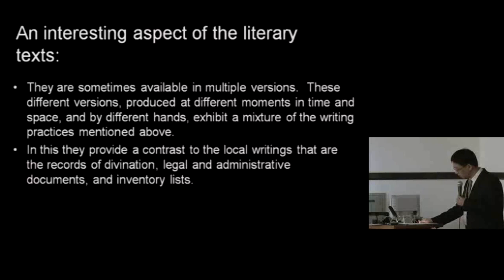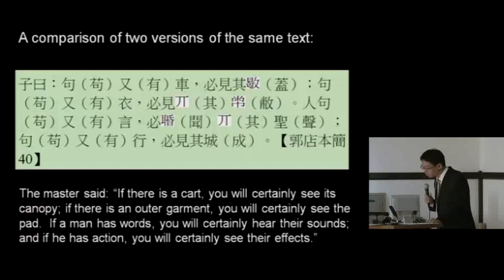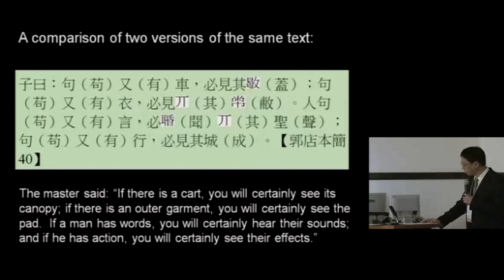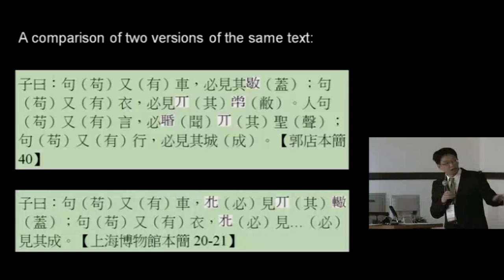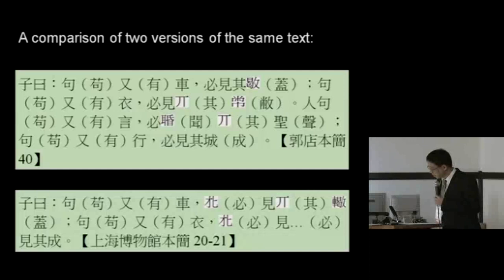Some examples can be found in the Zi Yi chapter from the Li Ji. Here's one section of the Zi Yi with the English translation: 'If there's a cart, you will see its canopy. If there's an outer garment, you will see the pad. If a man has words, you will hear their sounds. If he has action, you will see their effects.' The second copy of this text is largely the same, but with some important exceptions. In the first version there is the character Bi, and in the second version the same word 'must' is written in a different form.